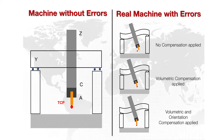The three-axis application corrects for the tool tip center only, compensating the correct errors at that location. The five-axis option then also corrects for the tool vector in addition to the tool tip center point.